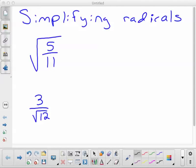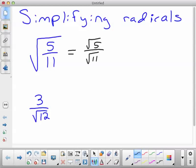Okay, so to simplify radicals is pretty easy. First off, split it up into different radicals. So this would be the square root of 5 divided by the square root of 11.